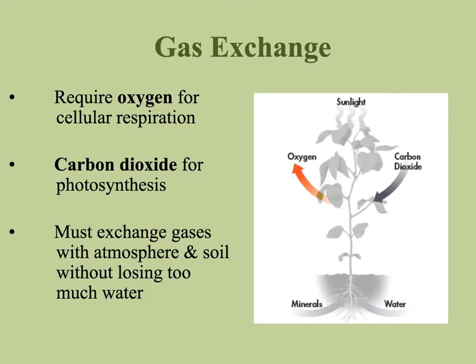Plants must also perform gas exchange, just like us. One of the Kahoot questions was that plants do not need oxygen — and that was false, because they do require oxygen, just like us, to be able to use the food that they make. That process is called cellular respiration. But they also use carbon dioxide — plants take in what we breathe out. Carbon dioxide is used for photosynthesis to make food, whereas oxygen is used to break down that food.